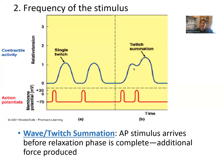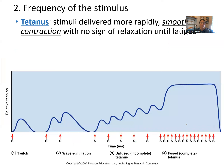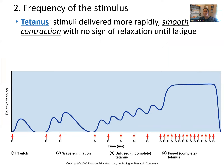An action potential arrives at the neuromuscular junction before the muscle cell has had a chance to fully relax, so the two twitches sum together. And really, this is a story of calcium — there's calcium left over in the sarcoplasm, so there are still some active sites wide open and still some cross bridges formed left over from the last twitch. If you continue to stimulate the muscle cell over and over again, essentially those muscle twitches fuse together and the muscle produces more and more tension.